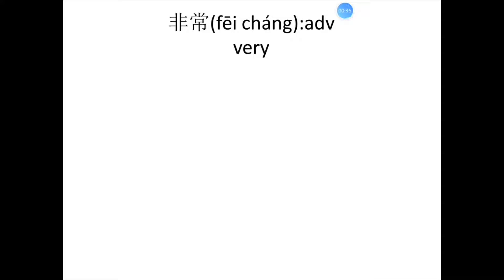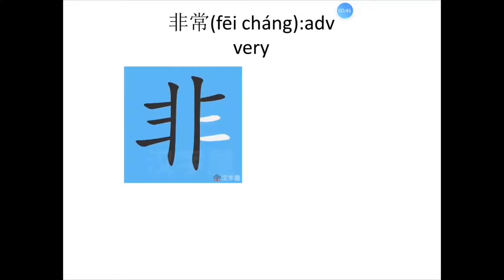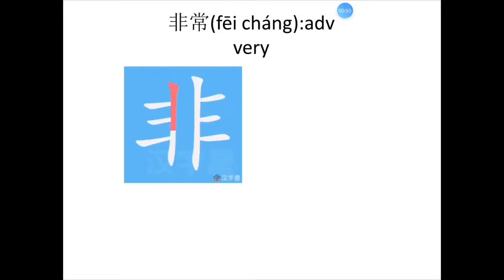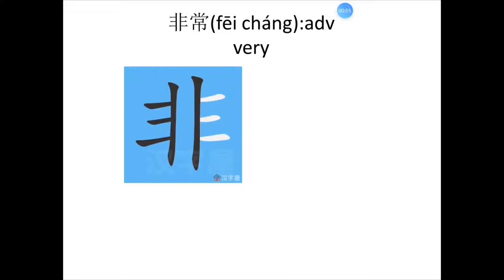Now let's see how to write 非. For 非, it can be divided into two parts: the left part and the right part. 一, 二, 三, 四, 五, 六, 七, 八.